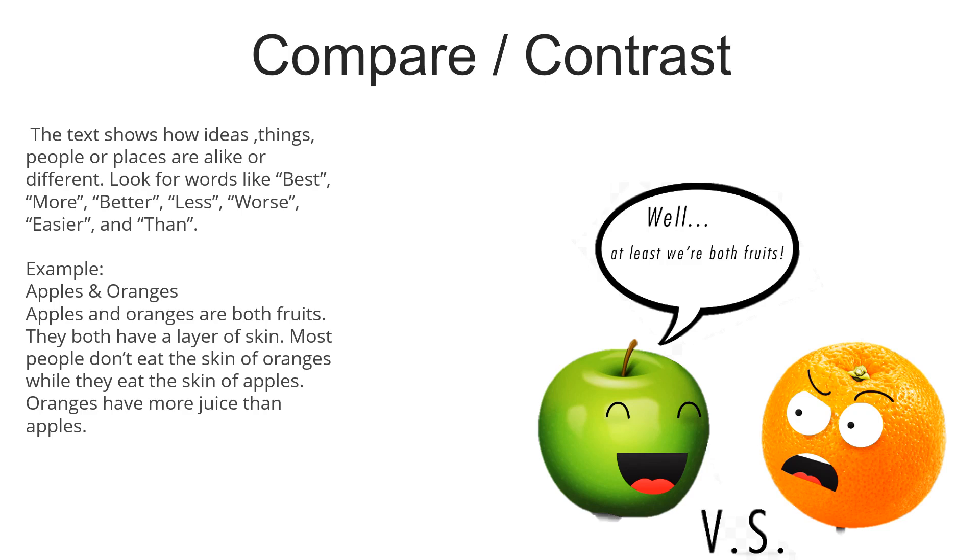As we see in this short paragraph, we have the compare and contrast pattern. We stated out first the similarities that they are both fruits and they both have a layer of skin. And then, we stated out the differences that people eat the skin of apples while they don't eat the skin of oranges. And that oranges have more juice than apples.